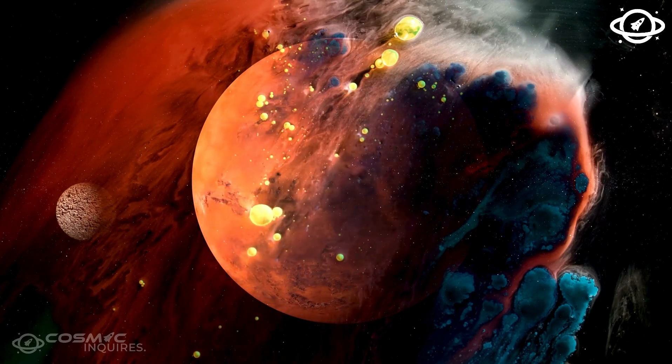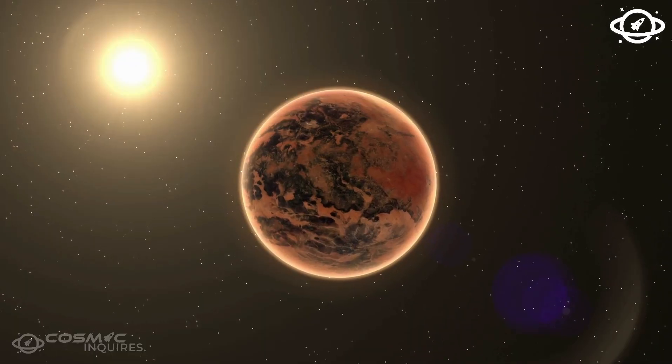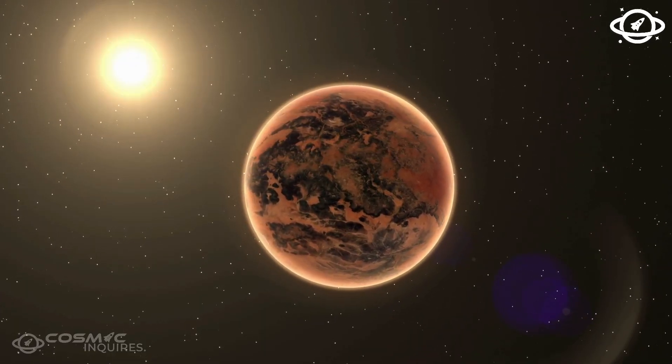If its orbit is highly elliptical and lasts for 10,000 years or more, it might only enter the inner solar system every few thousand years, making it visible at those times.